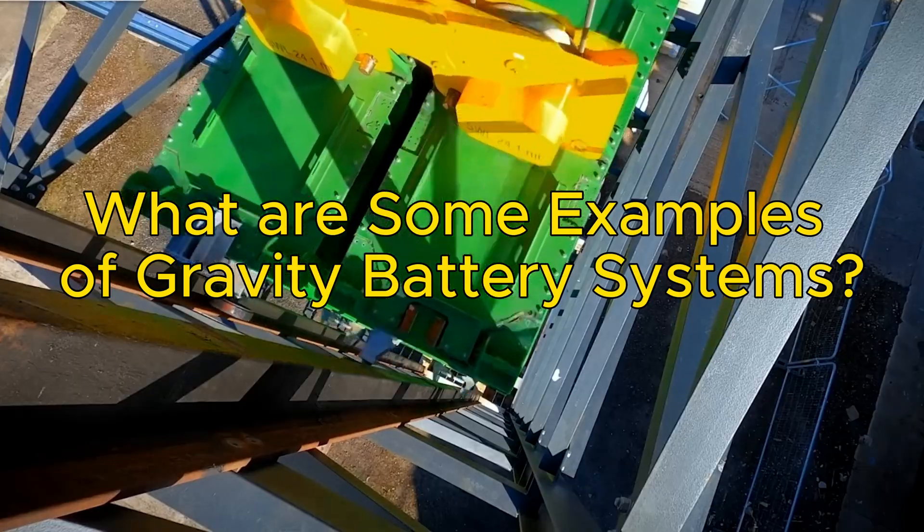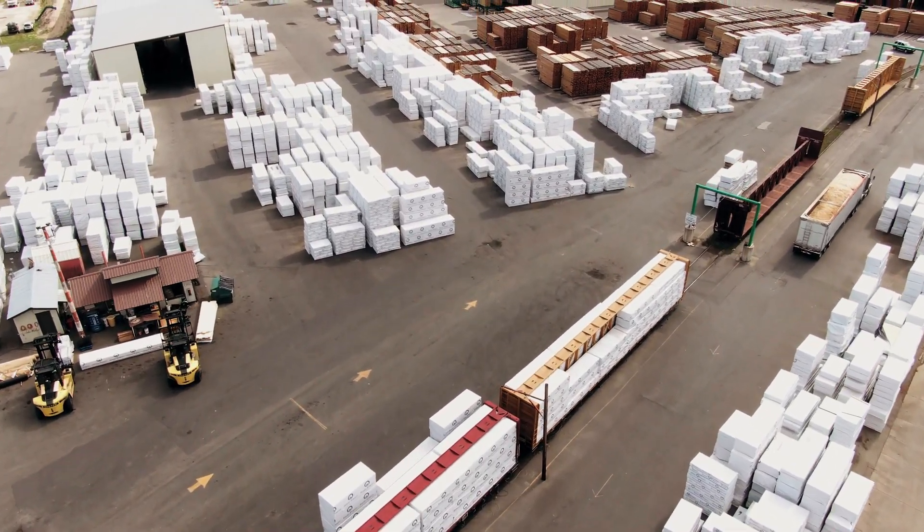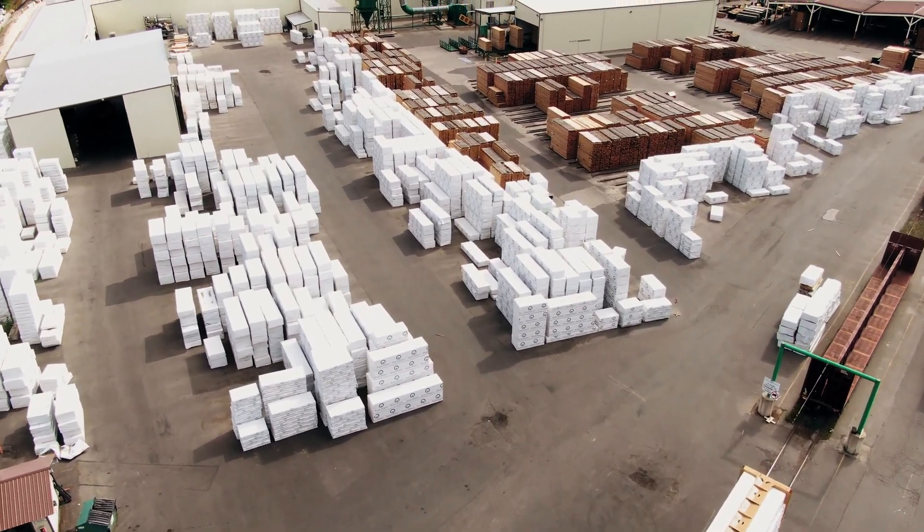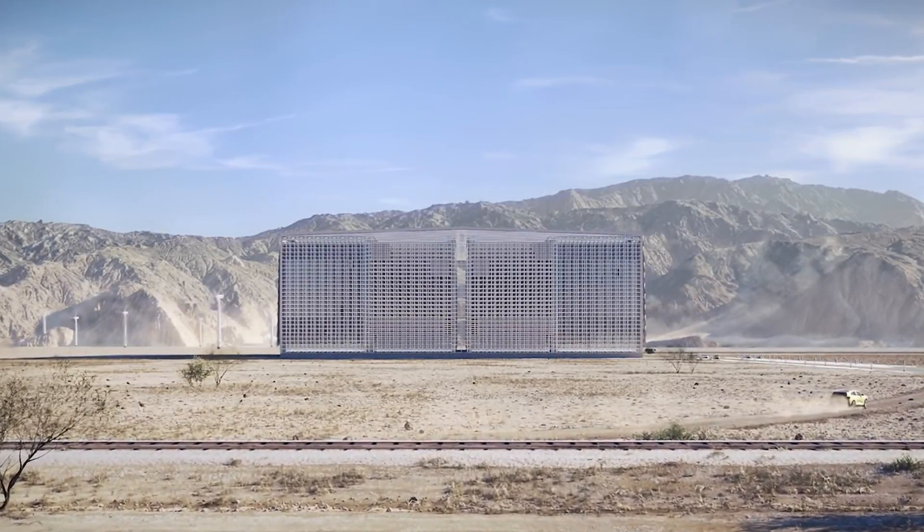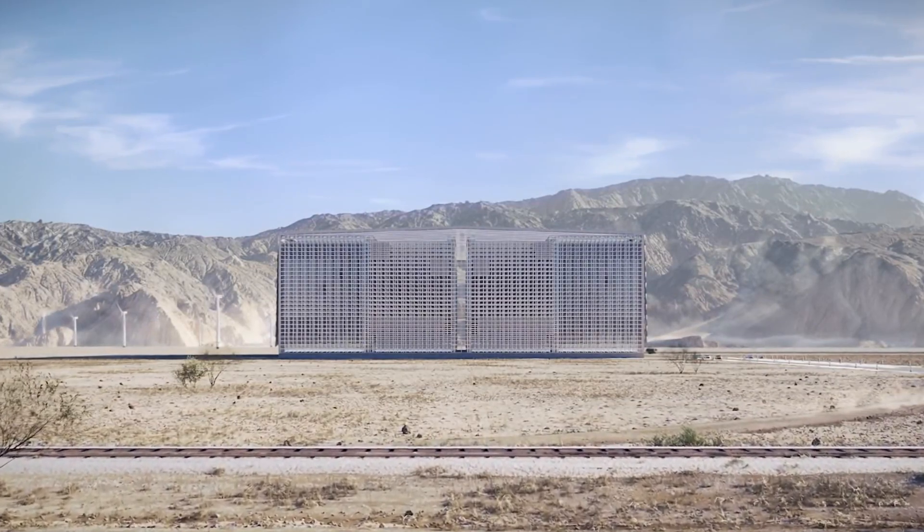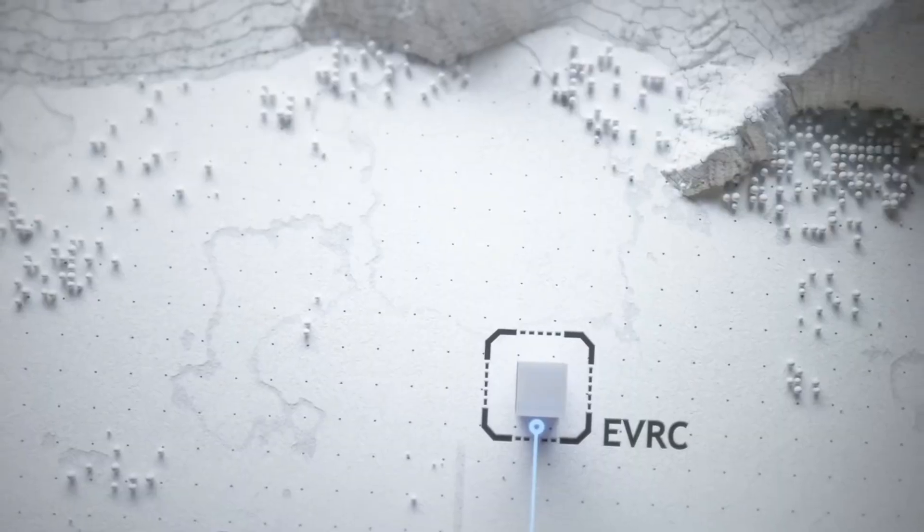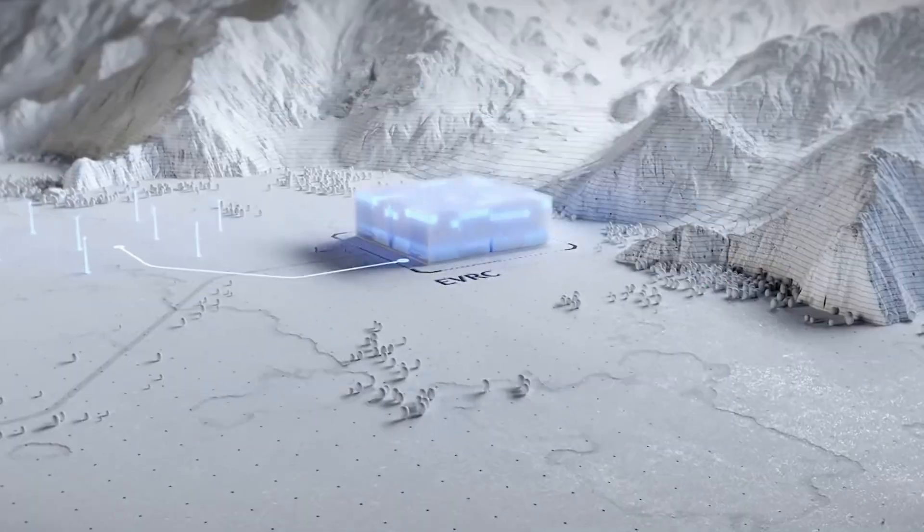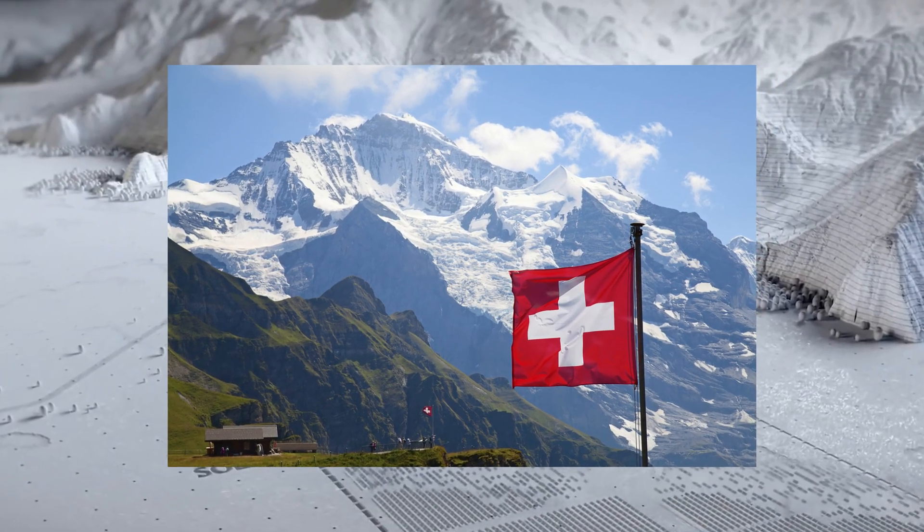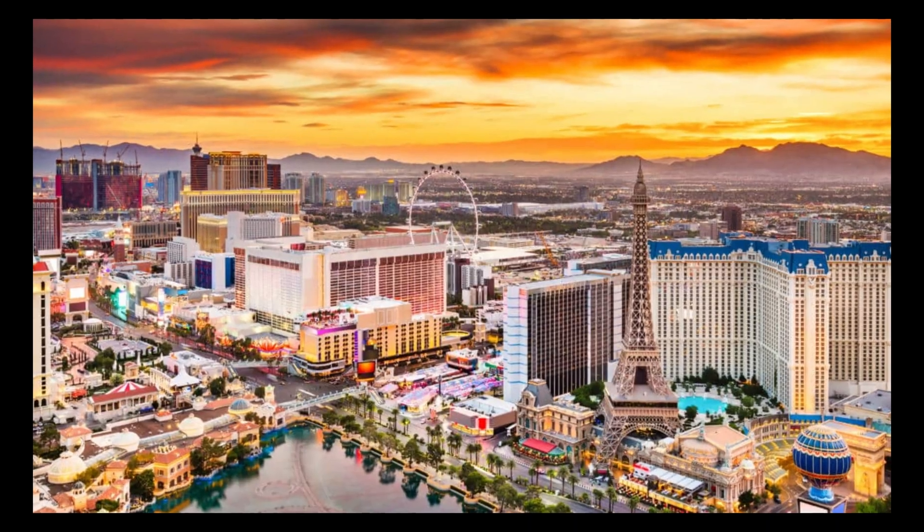There are several companies and projects developing and testing gravity battery systems around the world. Energy Vault is a Swiss company that uses cranes to lift and lower concrete blocks on a tower structure. The company claims that its system can store up to 80 MWh of energy with an efficiency of 85%. In 2020, it built its first prototype in Switzerland and plans to build more projects in India, Italy, Saudi Arabia, and Nevada.